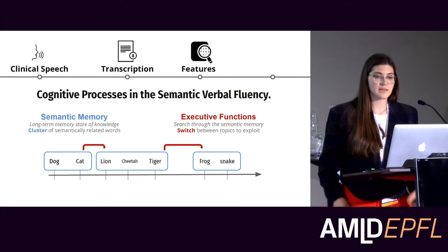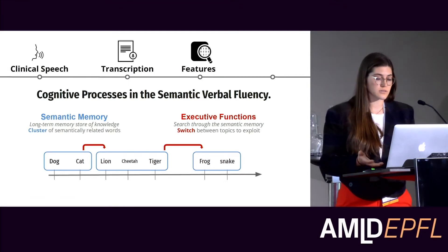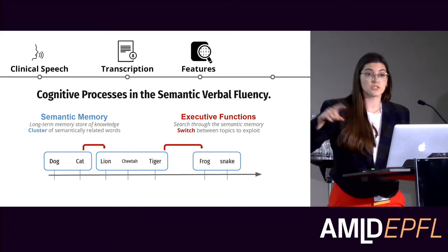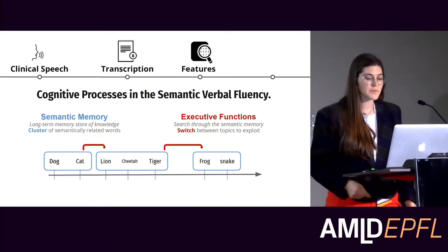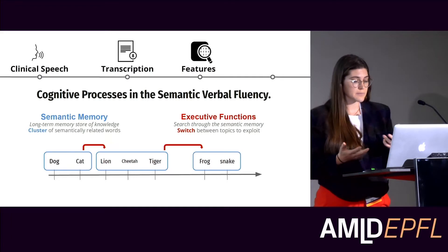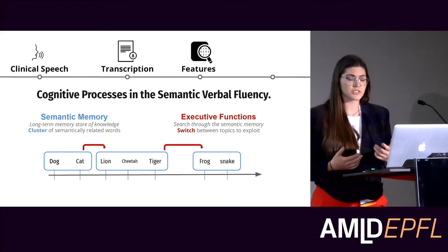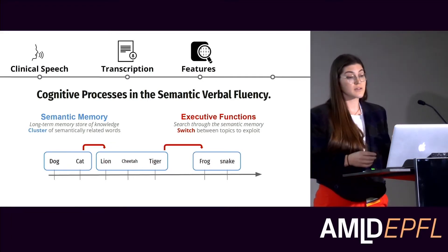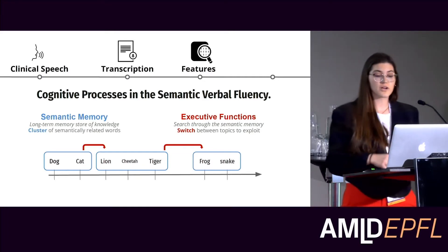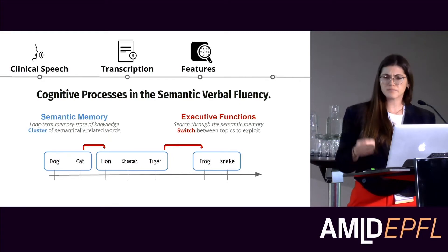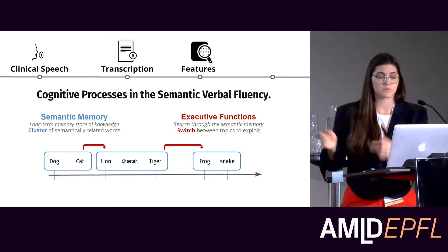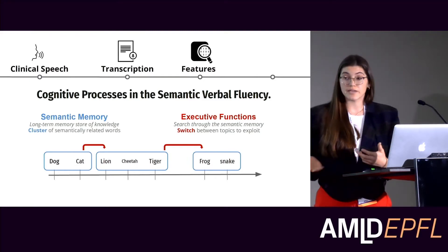We typically compute these clusters automatically. In this case we use FastText models — we see how close each word is by cosine distance, then we create a threshold, and that's how we determine the clusters automatically. From the clinical literature, if your cluster is a certain size, you have a semantic memory problem. Or if you're switching between clusters frequently, you have a problem with executive function — you can't tell when you've said enough words to move to the next cluster.